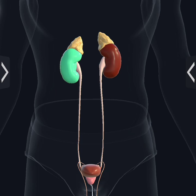Each kidney feeds urine into the bladder by means of a tube known as the ureter. In humans, they are roughly 11 centimeters (4.3 inches) in length. The kidneys regulate the balance of ions known as electrolytes in the blood, along with maintaining acid-base homeostasis.